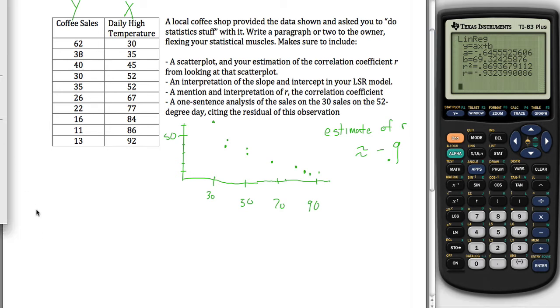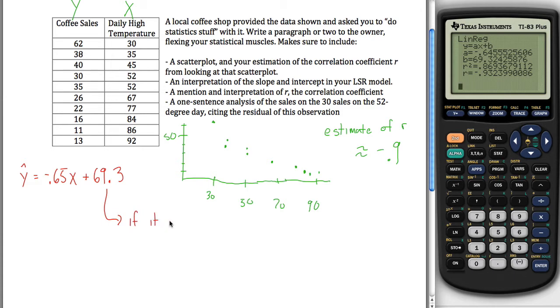Namely your linear regression model. It'll say y hat is equal to ax plus b, and a is this negative 0.65x plus b, b is 69.3-ish. So here's my least squared regression model, and if I had to interpret all these coefficients, what I would say is this 69.3 means that if it is 0 degrees out, I'd expect to sell 69 cups of coffee, maybe 69.3 cups.